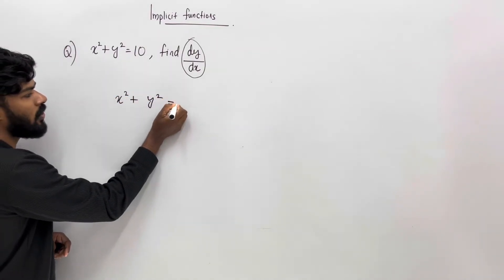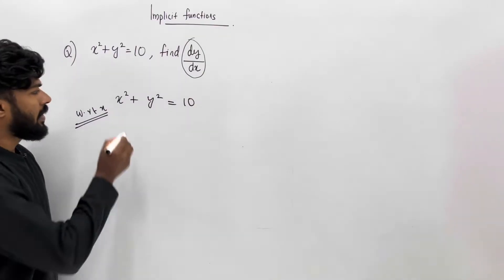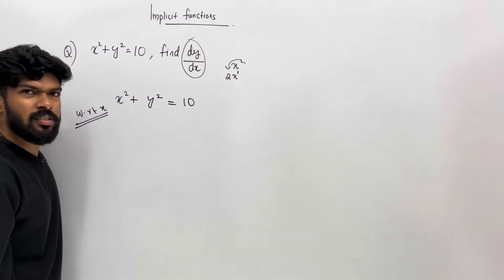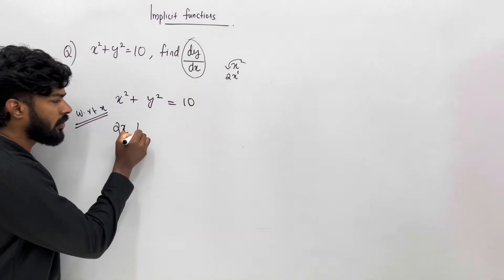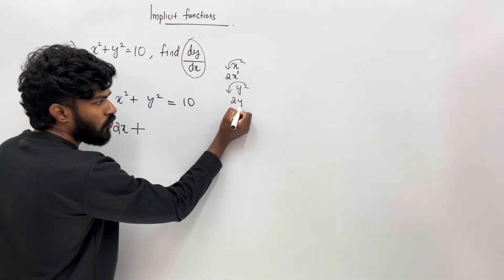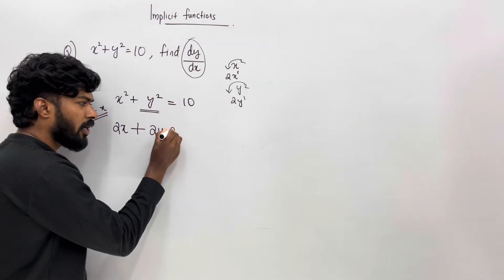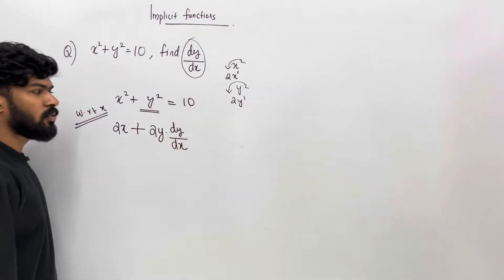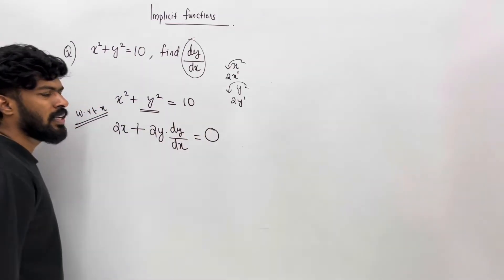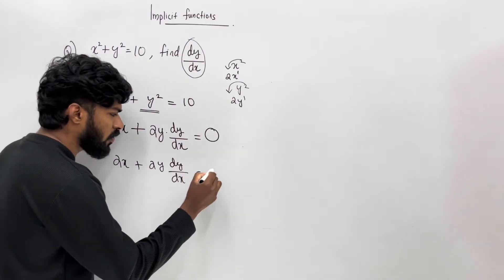y plus y squared equal to 10 — negative derivative, y derivative with respect to x. The x squared derivative is 2x. Rise to the bottom: x squared derivative is 2x plus y squared derivative. The y squared derivative — 2y raised to 1 — is 2y. So we can write a y derivative here as dy/dx. Equal to 10 — there is a constant, so the derivative is 0.